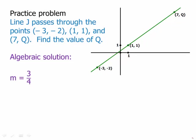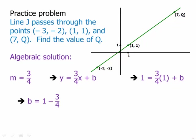We have a couple of ways of thinking about this. The first solution is algebraic — we need to find the slope first. From the two known points (-3, -2) and (1, 1), we have a rise of 3 and a run of 4, so rise over run is 3/4. That's the slope. We plug that into y = (3/4)x + b, and we can plug either point in. Plugging in (1, 1) is easier — solve for b and we get b = 1/4. So the equation is y = (3/4)x + 1/4.